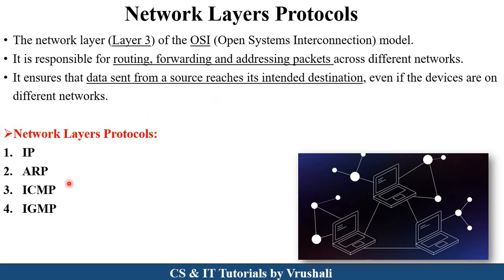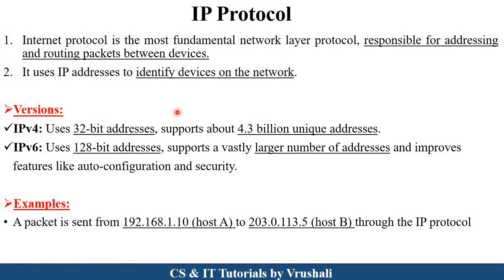For that purpose, the network layer uses different protocols like IP, ARP, ICMP, and IGMP. Now let's discuss these protocols one by one. The first protocol is IP protocol, that is Internet Protocol. As we discussed earlier in IPv4 and IPv6 addresses, they use the Internet Protocol. Generally, IP addresses are used to find out particular devices in a network. Every computer device has its own IP address. There are two types of addresses: IPv4 and IPv6.